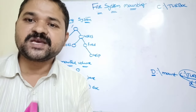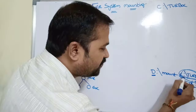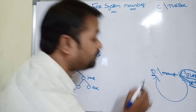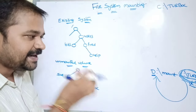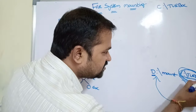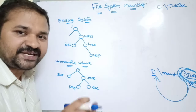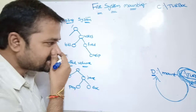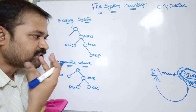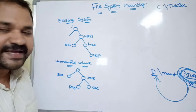So mounting is a process by which the operating system makes files and directories available at a specific path. Here, the operating system is making the Turbo C folder files available to the D file system, so that we can use Turbo C files in D and execute C programs from the D file system.